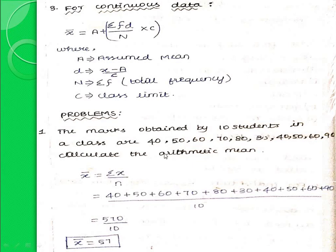First problem, ungrouped data — raw data. The marks obtained by 10 students in a class are 40, 50, 60, 70, 80, 30, 40, 50, 60, 90. Calculate the arithmetic mean. For ungrouped data, the formula is x-bar equal to summation x by n. We add all the observations and divide by the number of observations. Here n equals 10. If we add all the observations, we get 570 divided by 10, then the mean value x-bar is equal to 57. This is the answer.